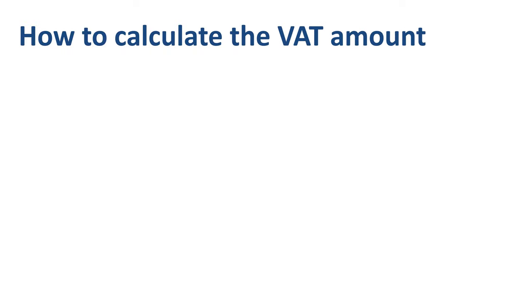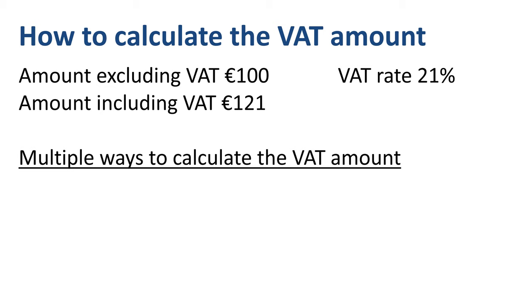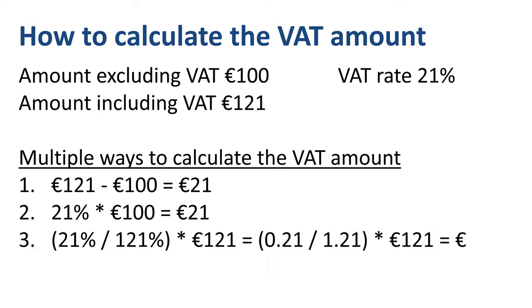How to calculate the VAT amount? That depends on which data points you have available. With three data points, you only need two for a successful calculation. You can take the amount including VAT (121 euros) and deduct the amount excluding VAT (100 euros). You can also take the VAT rate and multiply it by the amount excluding VAT. Or you calculate the ratio between the VAT rate and the amount including VAT — 21 to 121 — and multiply it by the amount including VAT. In each method, the answer is 21 euros.